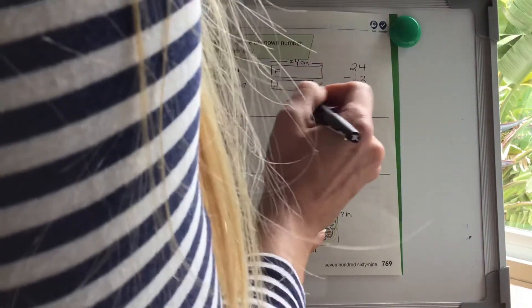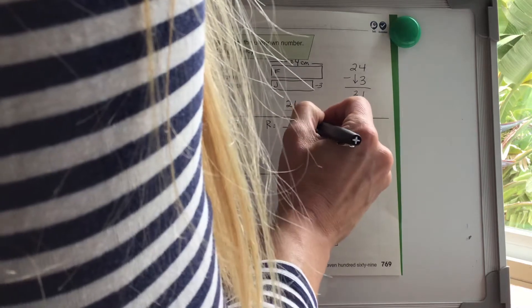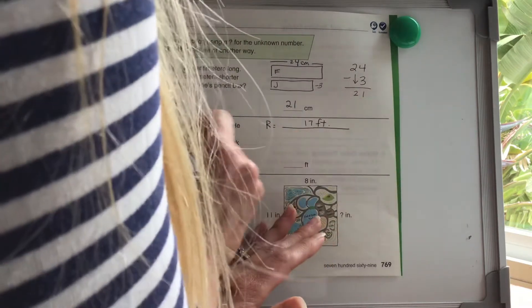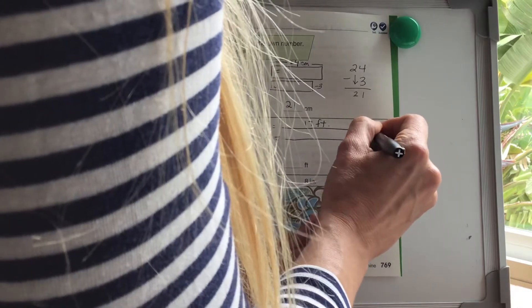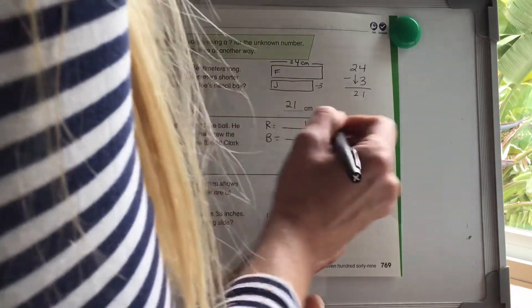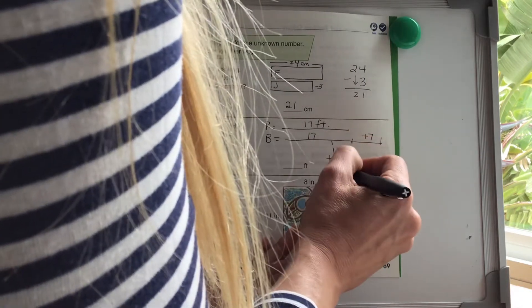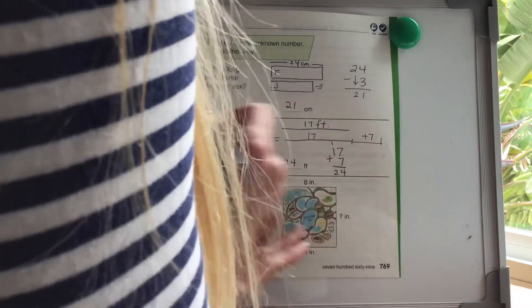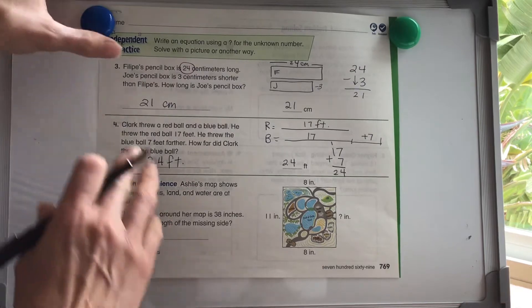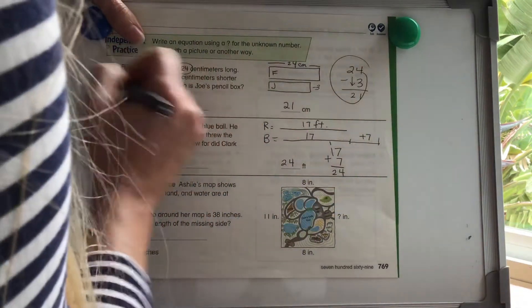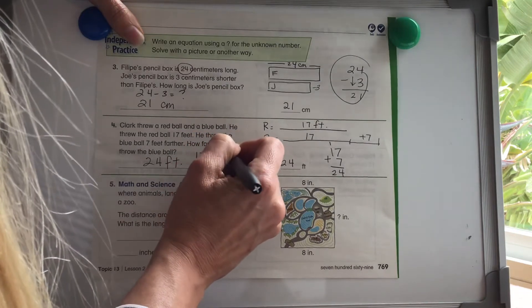Clark threw a red ball and a blue ball. He threw the red ball 17 feet. So I'm going to do R for red and I'm going to put 17 feet. I'm going to do FT as my abbreviation. He threw the blue ball seven feet further. So the blue ball, he did the same amount as this plus seven more feet. So how far did Clark throw the blue ball? Well, it's going to be 17 plus seven. So let's take a look at that. Let's stack that 17 plus seven, seven plus seven is 14 and one plus one is two. So we have a total of 24 feet. So he threw the blue ball 24 feet. Our equation on this one, we did it over here, but if you wanted to do the equation, you do 24 minus three equals question mark. The equation here would be 17 plus seven equals question mark.